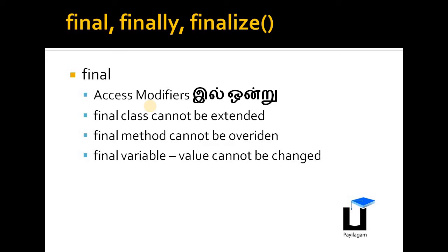The final keyword is used in a class. If you apply final to a class, the class cannot be extended further — meaning no subclass can be created from it. A final method cannot be overridden by a subclass, so the subclass cannot change the definition of that method.